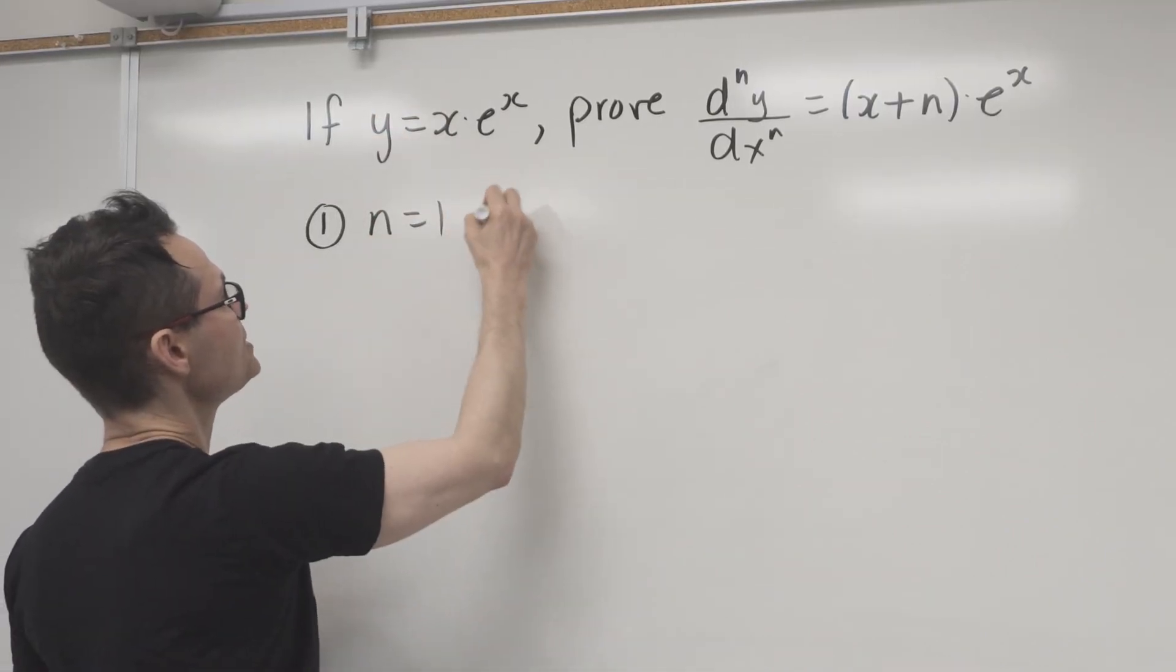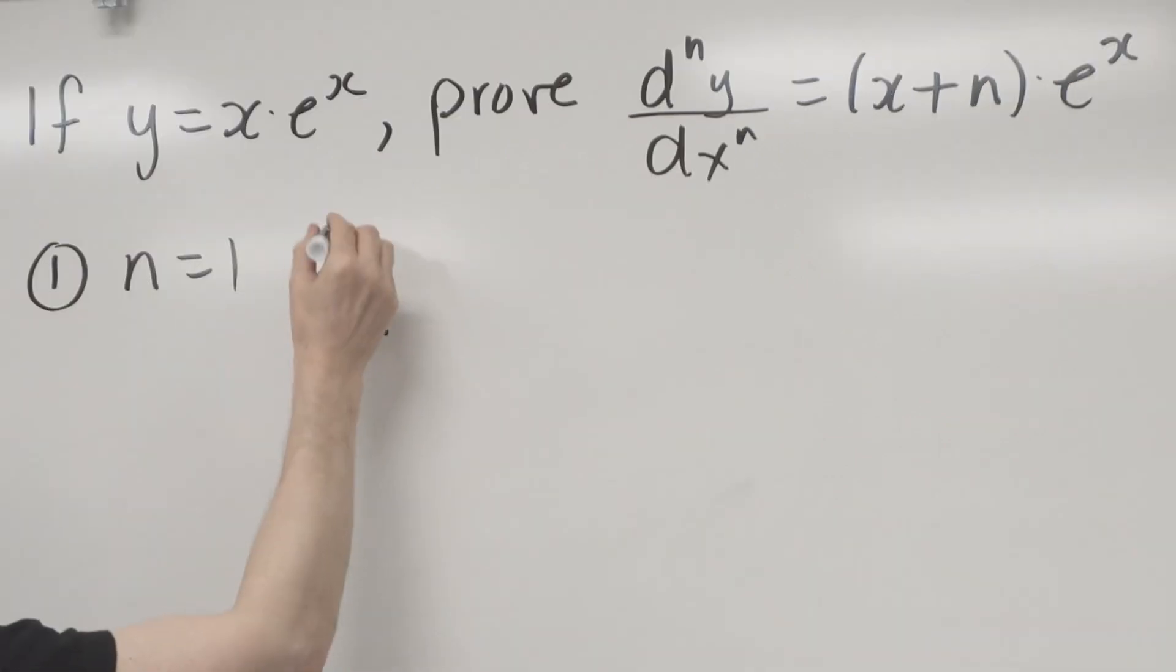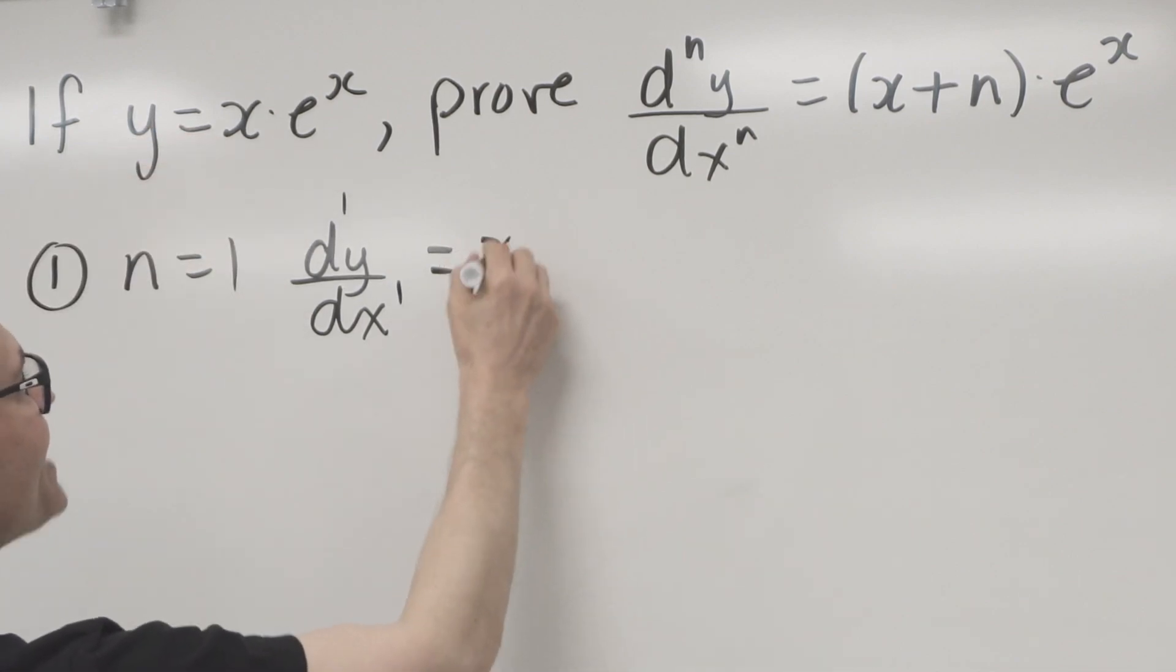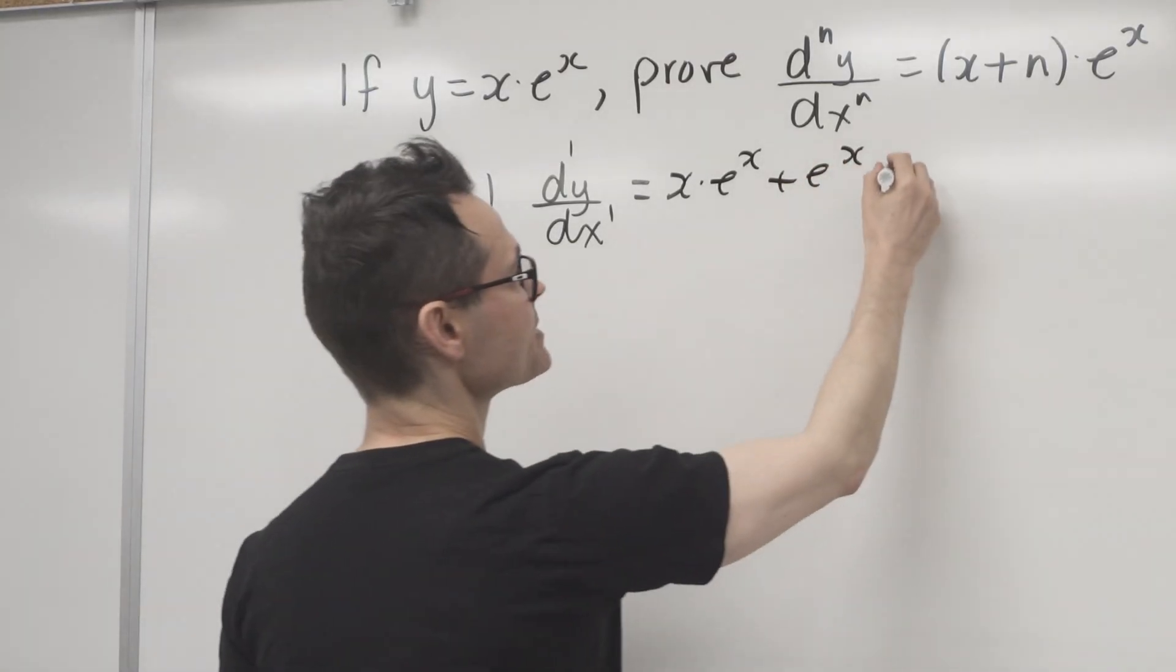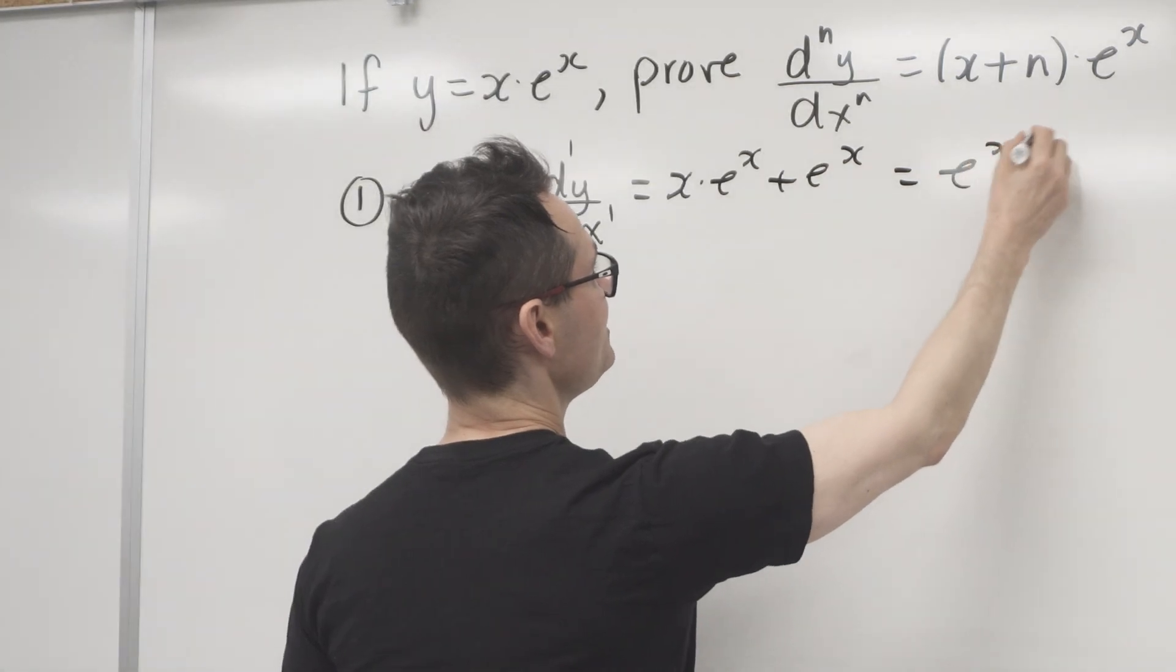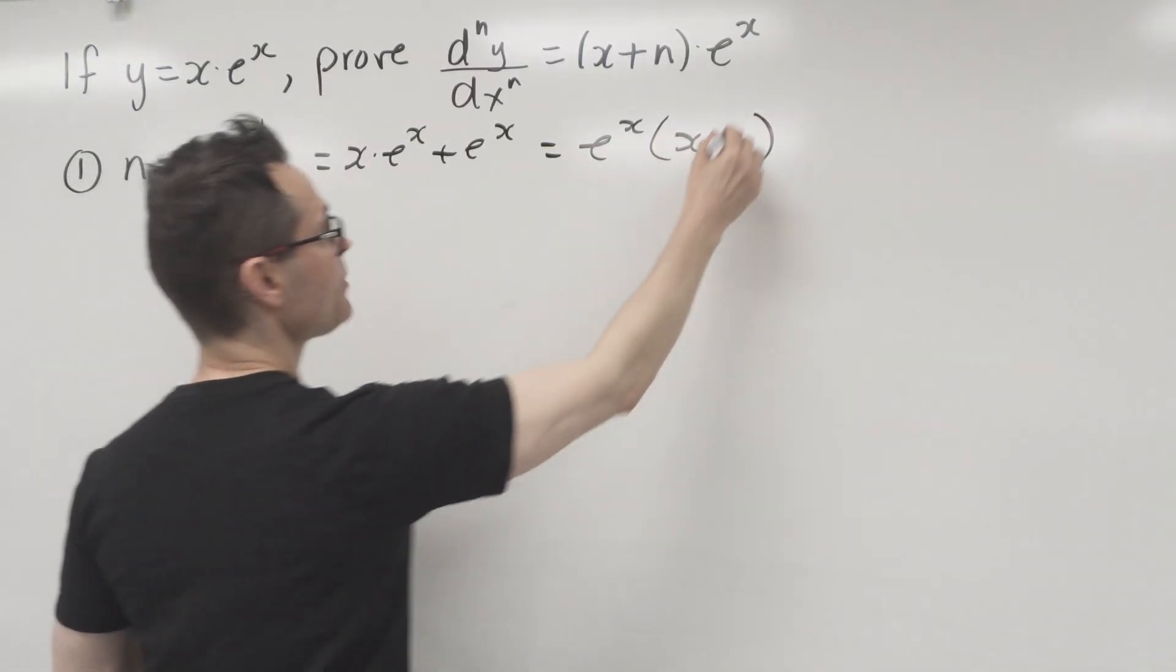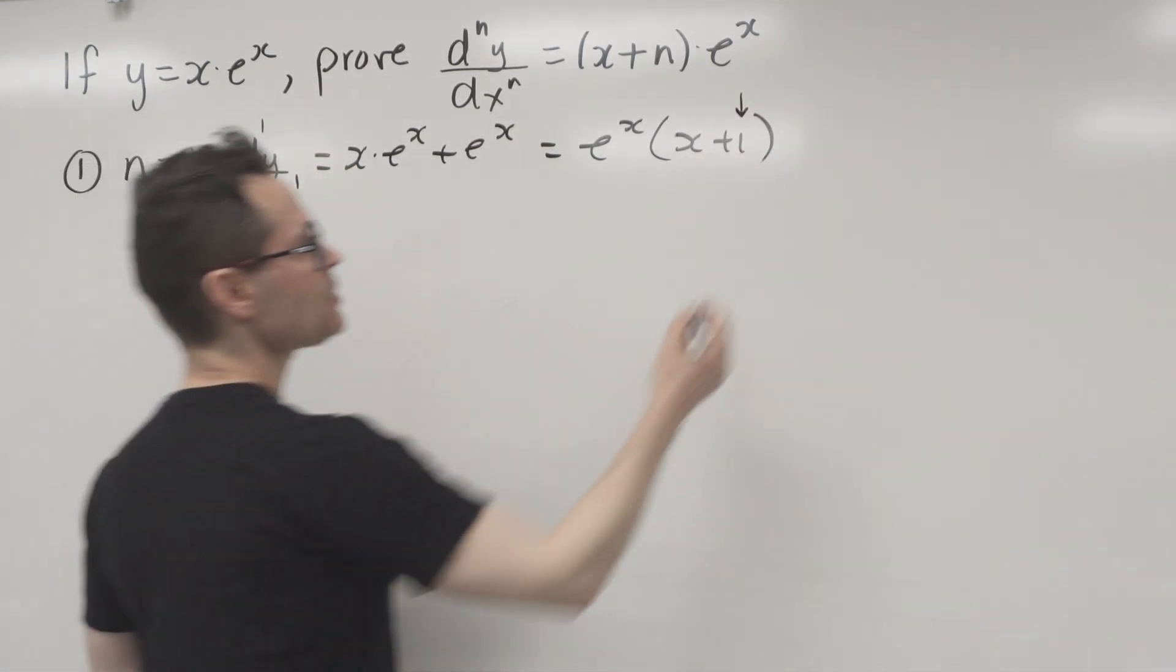So I'm going to take the first derivative, which is dy dx, and in this case the 1s would go there, is equal to, well, the first times the derivative of the second plus the second times the derivative of the first. So that's x times e to the x plus e to the x. And of course, I can take e to the x out, and that's going to be e to the x times x plus 1. And you can see right there, it was the first derivative, and we get 1, x plus 1. So it's true.